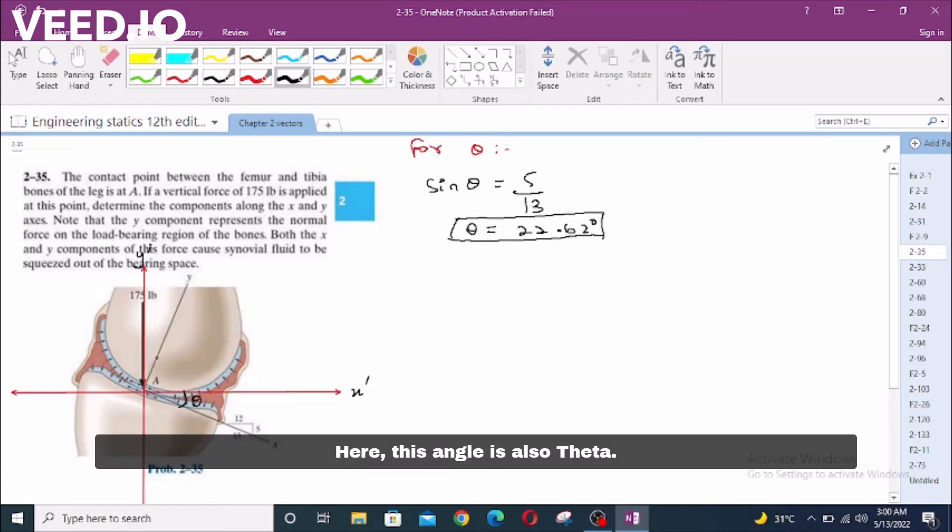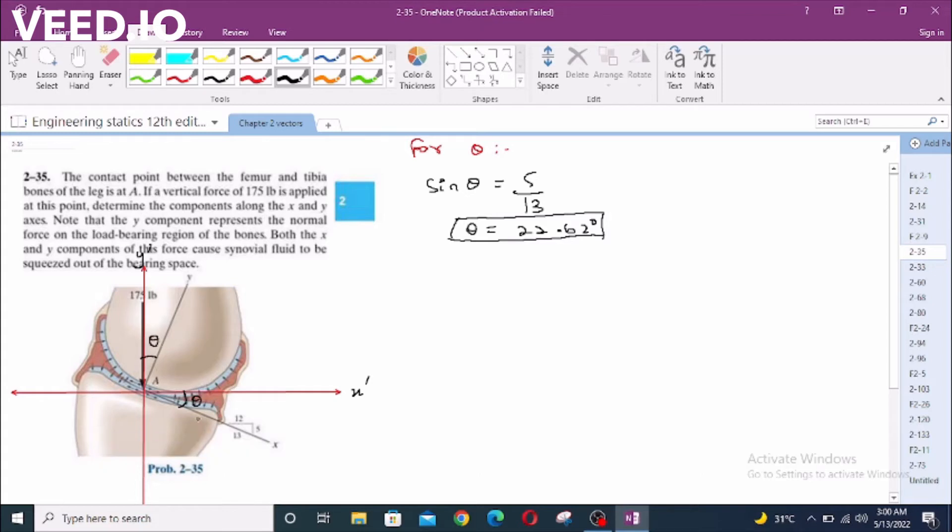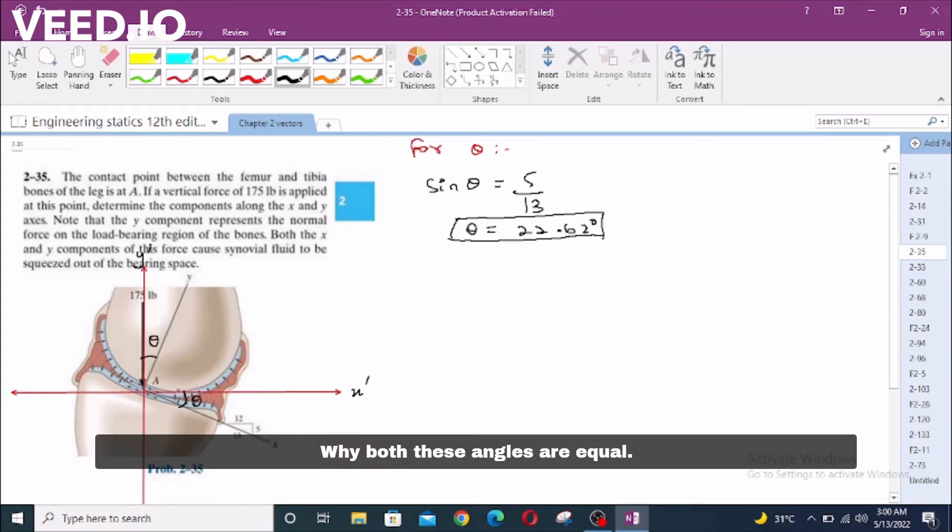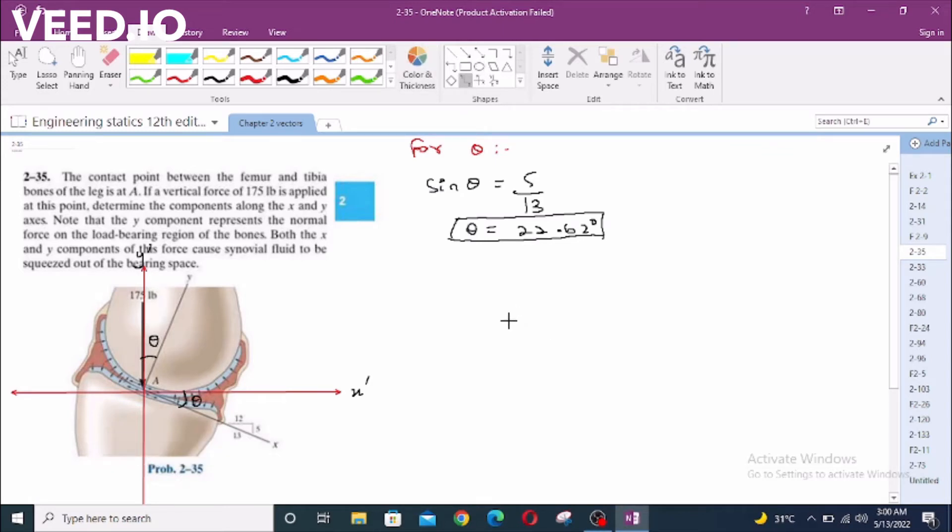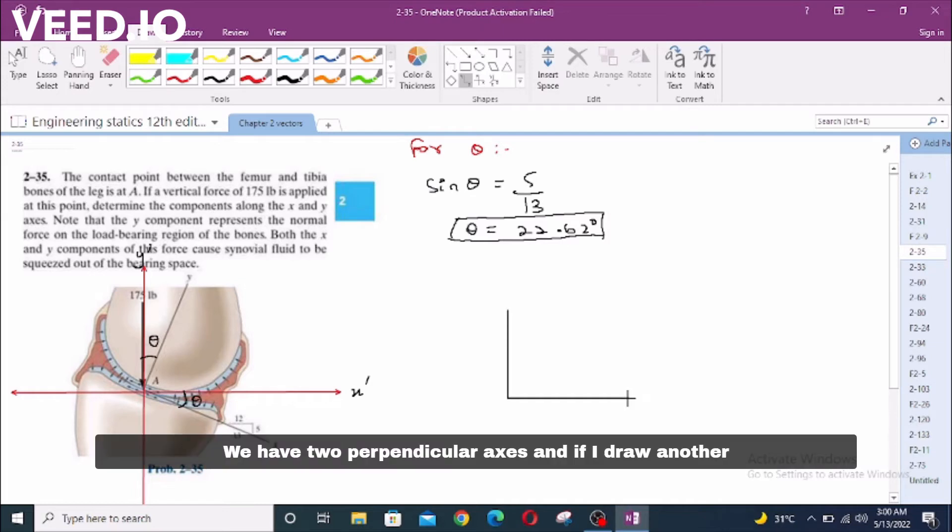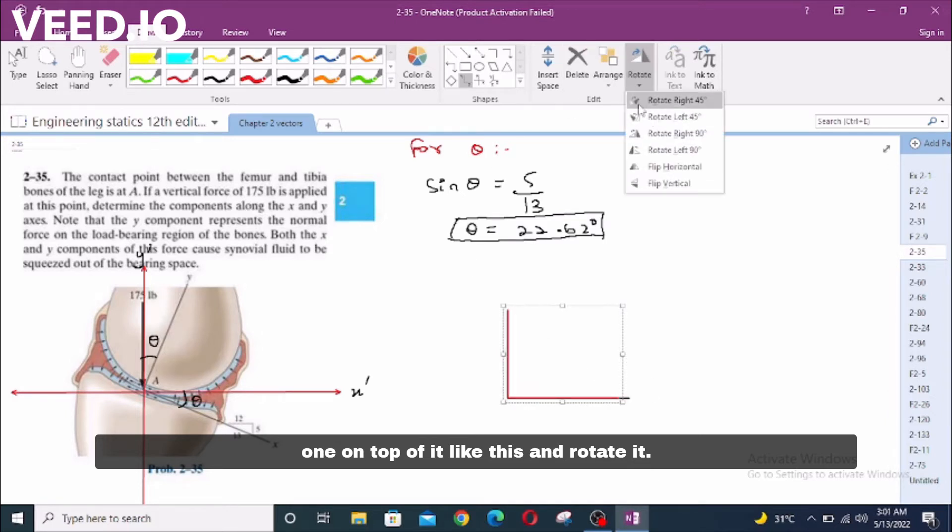Here, this angle is also Theta. Why? Both these angles are equal. For this, let's assume a condition. Here, we have two perpendicular axes. If I draw another one on top of it like this and rotate it.